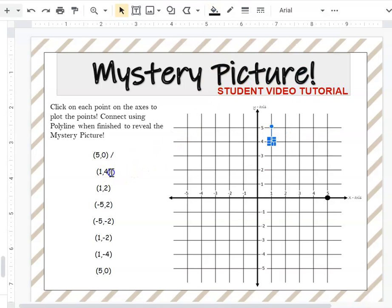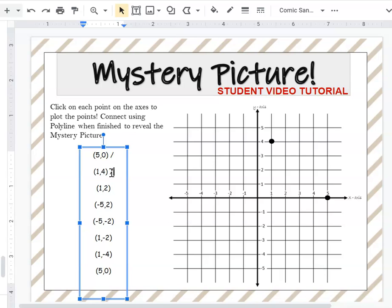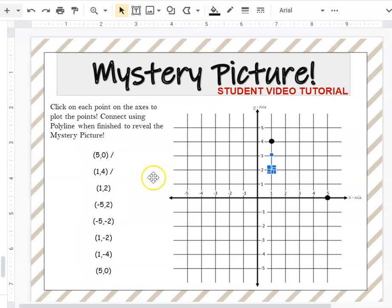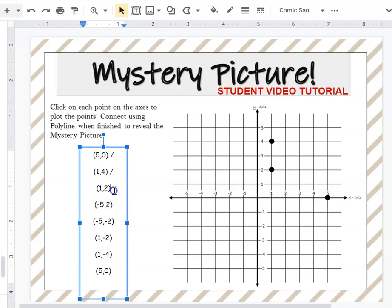Next, mark it off and continue with your next coordinate pair, which is one, two in this example. Over one, up two, click on that, fill that in with a color and mark it complete.